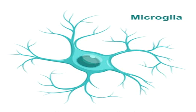In inflammatory brain disease, microglia become activated. They migrate to the site of the lesion, where they proliferate and become phagocytic, destroying microorganisms by engulfing them.